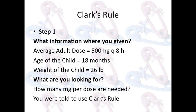Step one: what information were you given? Looking at the problem, they gave you the average adult dose, which equals 500 milligrams every eight hours; the age of the child, which is 18 months; and the weight of the child, which is 26 pounds. What are you looking for? You are looking for how many milligrams per dose are needed.